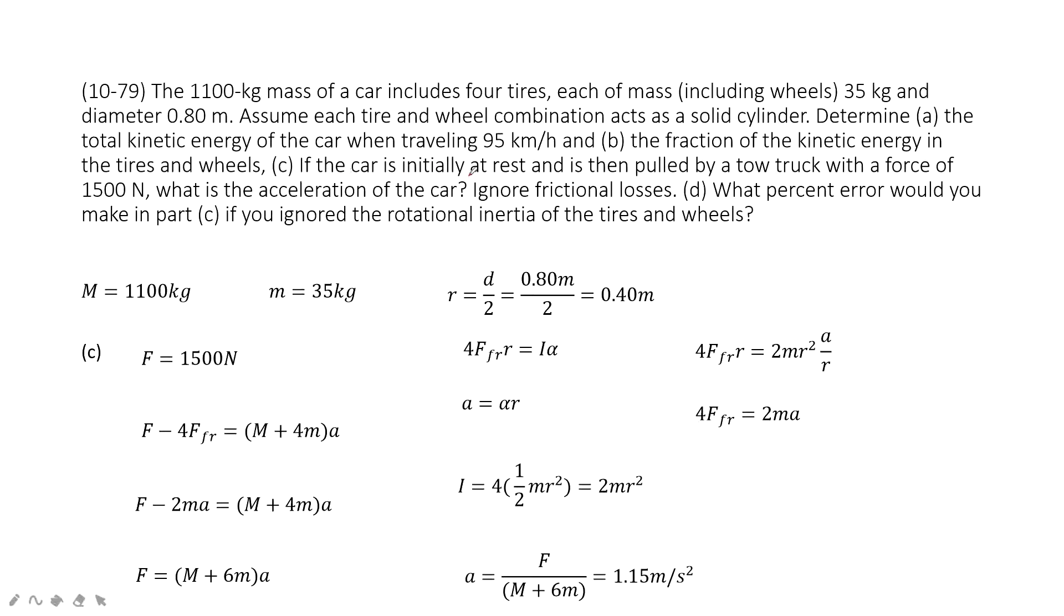The third one tells you that initially the car is stationary and then pulled by a truck. The truck acts a force 1500 newton on the car. Find acceleration for the car. We apply Newton's second law for this object. The net force comes from the force acted by the truck and the friction force, the ground to the tire, so four tires. The total mass is car plus four tire times acceleration A. If we want to find acceleration A, we must find the friction first.